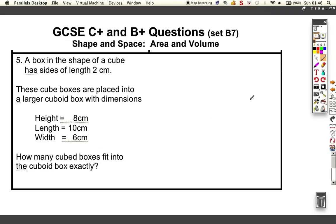Look at the last one. We've got a box in the shape of a cube with sides which are two centimetres. These cube boxes are placed into a larger cuboid box with height of eight. Well, let's look at this. Let's draw a sketch out just to help us. So it's a height of eight and a width of six, so if we draw the front face, it's eight there and six there. And if we draw it then backwards, it goes ten backwards.